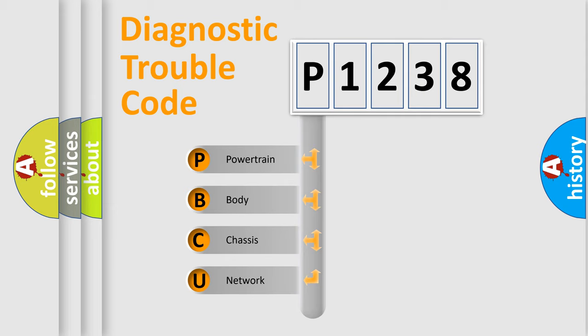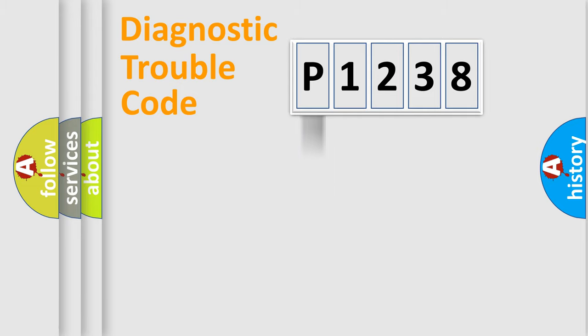We divide the electric system of the automobile into four basic units: Powertrain, Body, Chassis, and Network. This distribution is defined in the first character code.